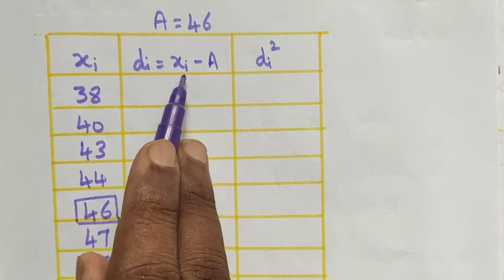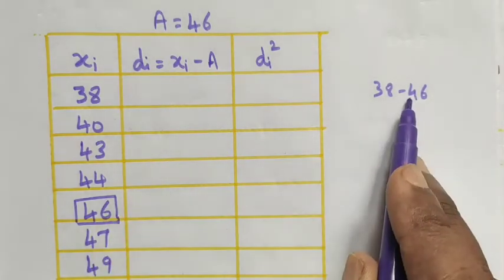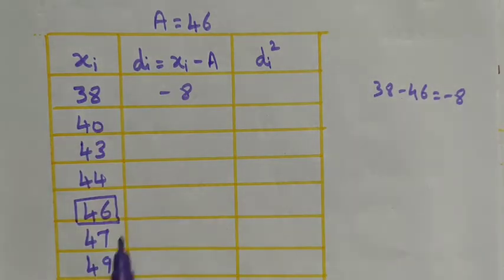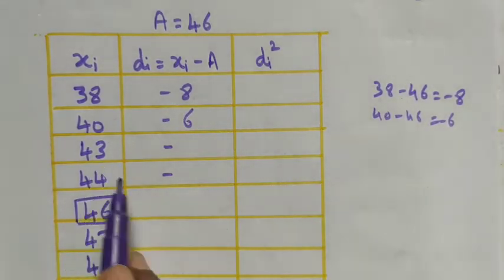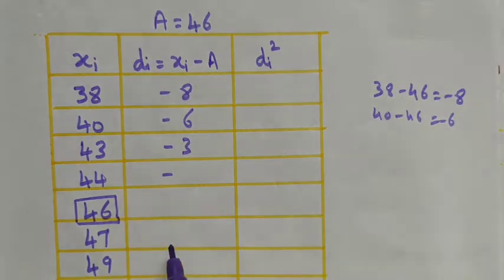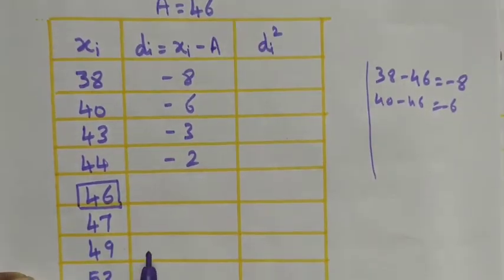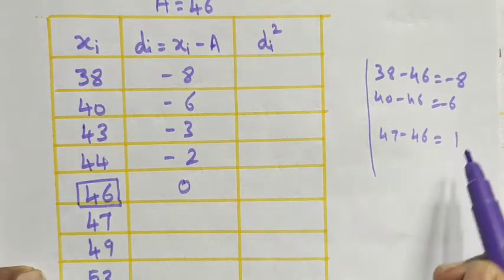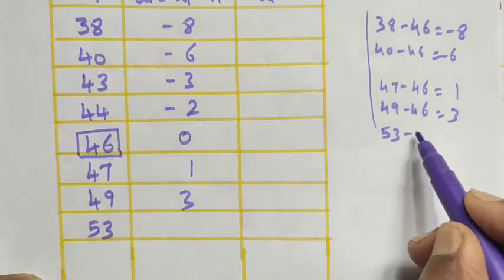Now we find the deviations di = xi minus a. 38 minus 46 = minus 8; 40 minus 46 = minus 6; 43 minus 46 = minus 3; 44 minus 46 = minus 2; 46 minus 46 = 0; 47 minus 46 = 1; 49 minus 46 = 3; 53 minus 46 = 7. Values above 46 are negative and below are positive.